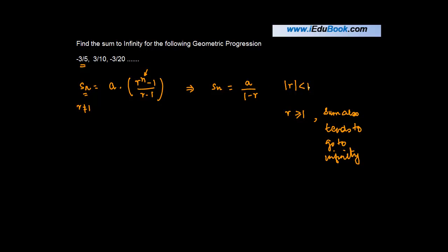So if the mod of r is less than 1, and in any case the value of r should lie between minus 1, which means that r is greater than minus 1, but it is less than 1. So for such a kind of a situation, there are two parameters.